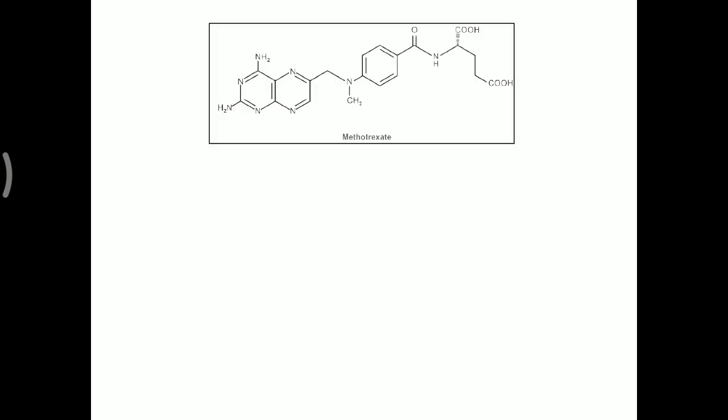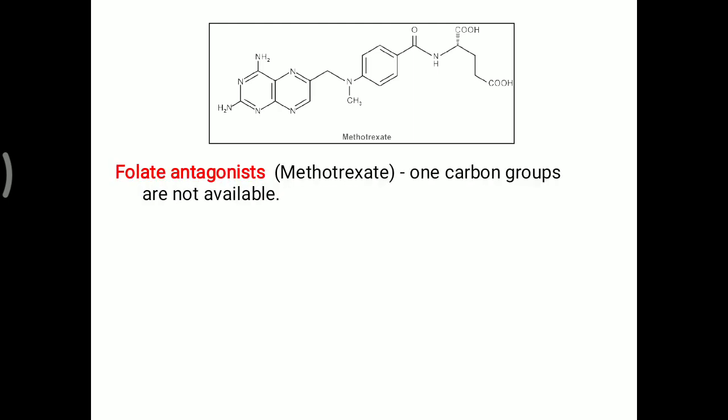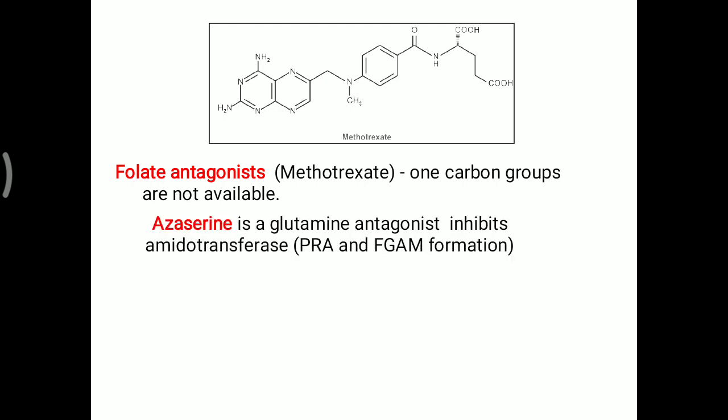Understanding purine synthesis makes it easy to understand different analogs. Folate antagonists, particularly methotrexate, are important here. Folic acid is needed for one-carbon group metabolism and transportation. In purine synthesis, the 2nd carbon and 8th carbon are added with the help of THFA. When methotrexate is present, these 2nd and 8th carbons will not be added over the purine ring, so purine formation is inhibited, and this can also be utilized as an anti-cancer drug.